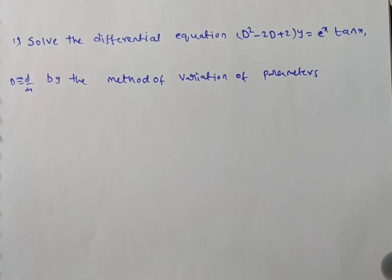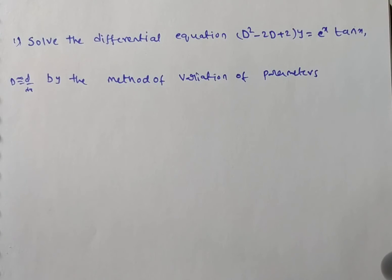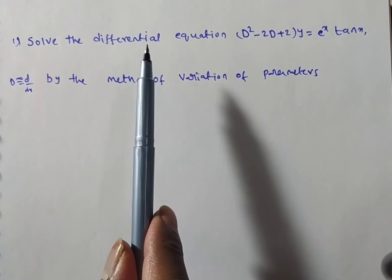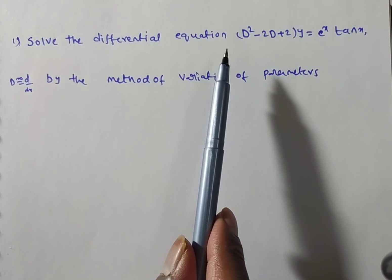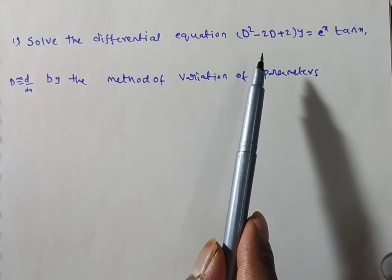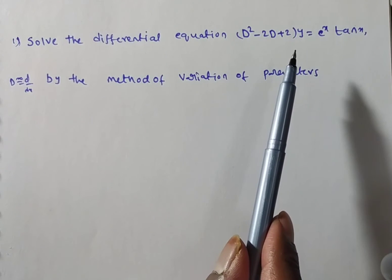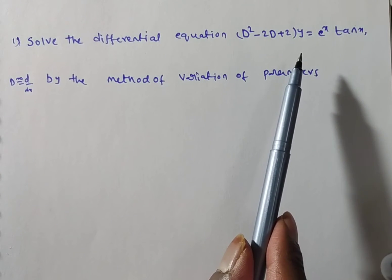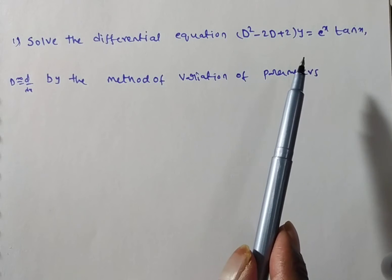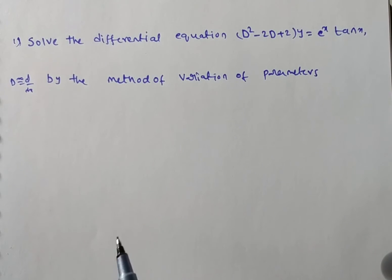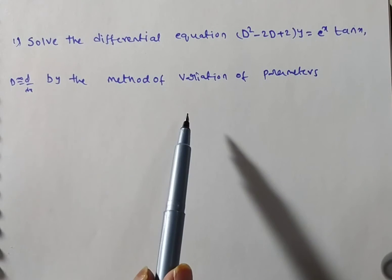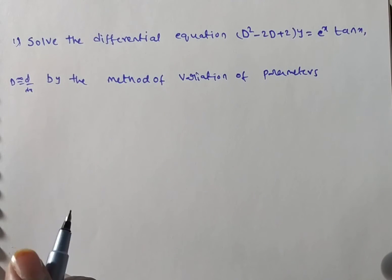Hi friends, in this video we are solving a problem on the method of variation of parameters. The given problem is: solve the differential equation (D² - 2D + 2)y = e^x · tan(x) by the method of variation of parameters.